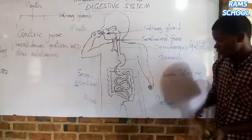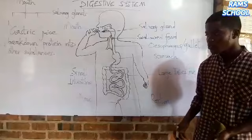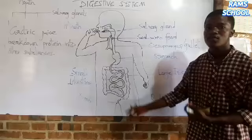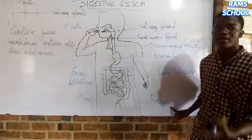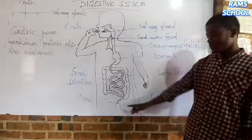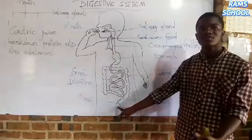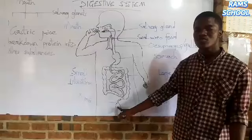The rectum stores the solid part of the undigested food substance temporarily — it is the temporal storage area. After a short period of time, the undigested food substance comes out from the anus as feces. The anus drains out feces, or undigested food substances, from the body.